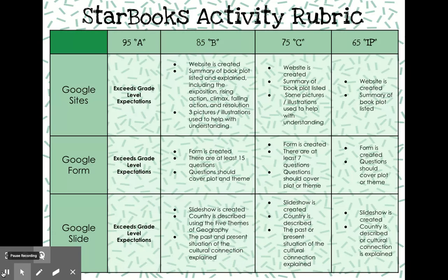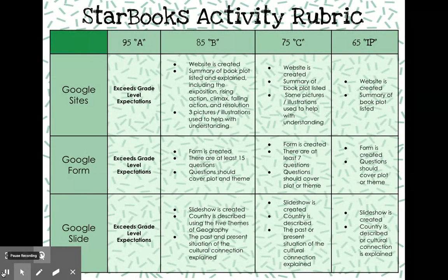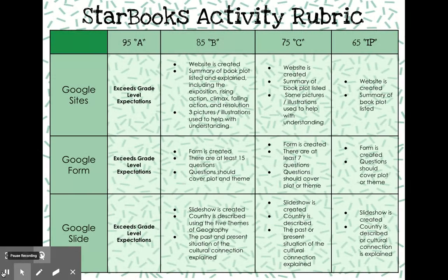Additionally, you could do a Google Form. You create a form with at least 15 questions. These questions should be higher-level thinking and cover plot and theme. The goal is to not have a one-word answer be acceptable, but make you think a little bit deeper, as if it was a quiz given to your classmates at the end of the book. You do need to have the answers also submitted so that I know you understand the question.